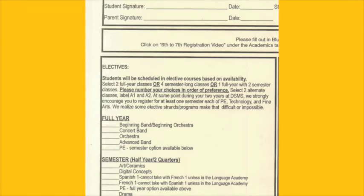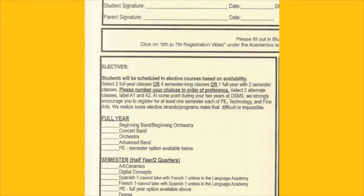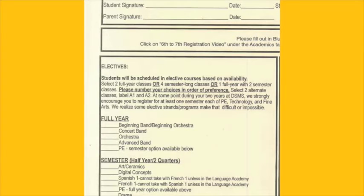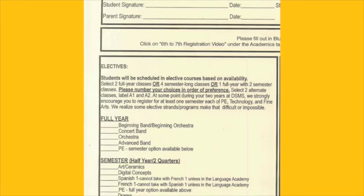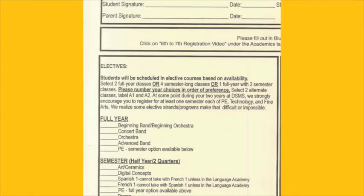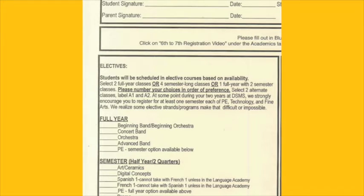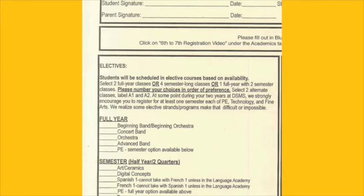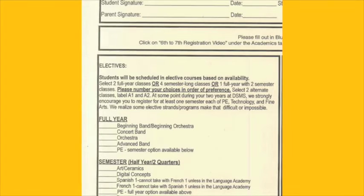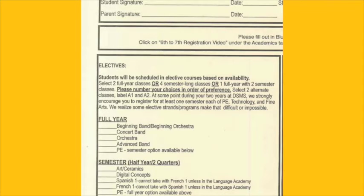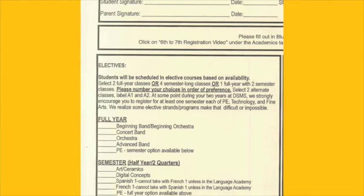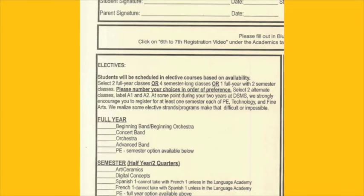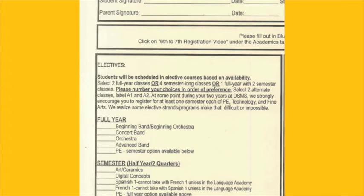Please be careful when making these choices. Make sure that you choose classes that you would like to take next year. We hire teachers based on the choices that you make on this card — for example, if 300 students all want to take French next year, we need to be sure we have enough classes. So please be careful, take it seriously, and talk it over with your parents. We do our best to place you in the classes you choose, but after registration ends, we are not able to make schedule changes. This is why it is so important that you choose your electives carefully.